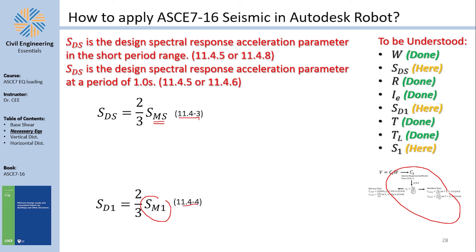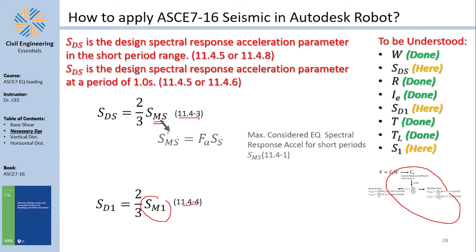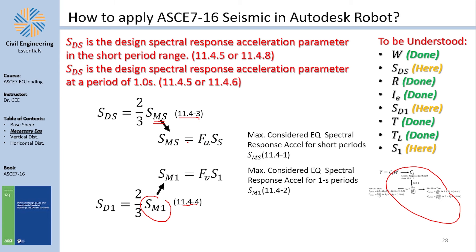SMS = FA × SS and SM1 = FV × S1 (equations 11.4-1 and 11.4-2). SMS and SM1 are the maximum considered earthquake spectral response accelerations for short and long periods respectively. SS and S1 are mapped spectral accelerations (location-dependent); FA and FV are site coefficients that modify those map values based on soil conditions.